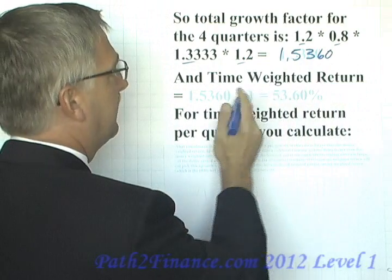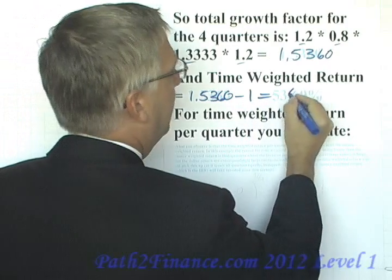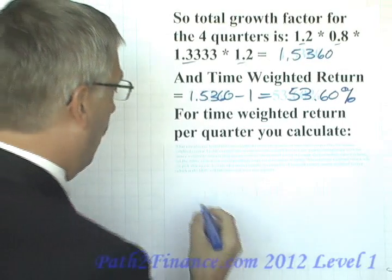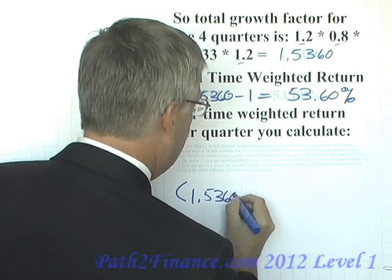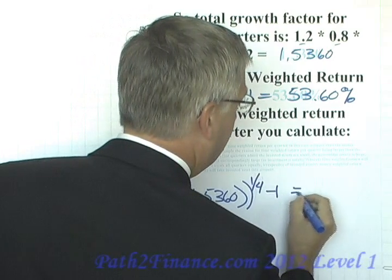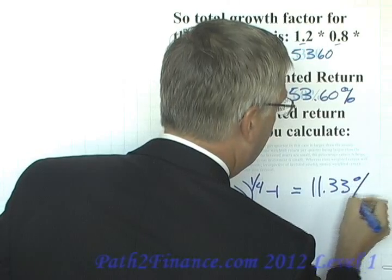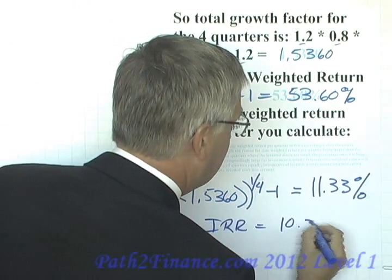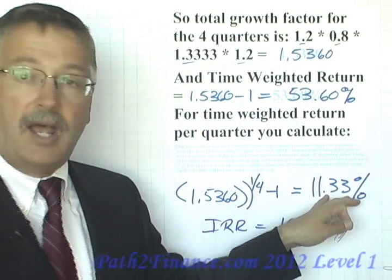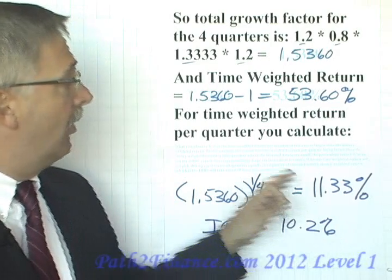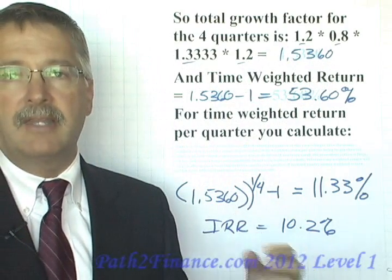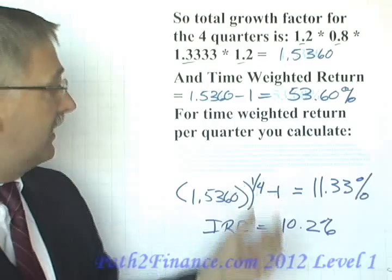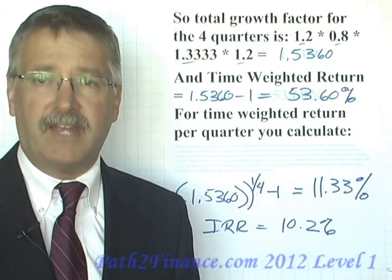To get the time-weighted return, we take that number minus 1, which equals 53.60% for the entire period. To weight that return by a quarter, we take 1.5360 to the power of 1/4 minus 1, giving us 11.33%. Recall that our IRR was approximately 10.2%. The time-weighted return was a little higher than the IRR because the time-weighted return doesn't capture the amount of money invested in any given quarter. While the investor had a very strong return in quarter three, he didn't have as much at work. The IRR actually captures these differences in the amount invested at any given time.